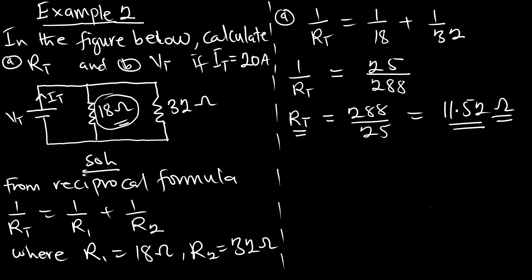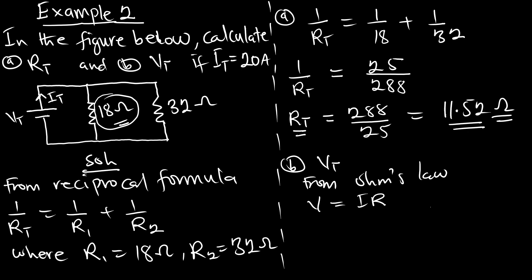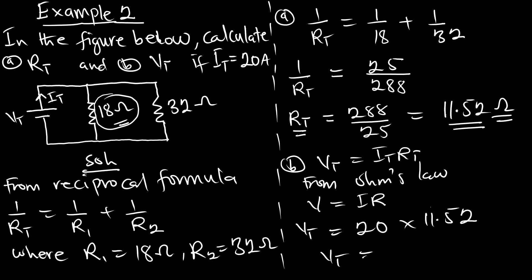Now for part b, VT should be calculated. From Ohm's law, VT = IT × RT. The total current IT is 20 amperes and RT is 11.52 ohms, so the total voltage is 20 × 11.52 = 230.4 volts.